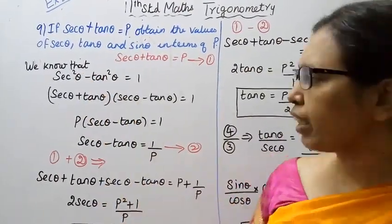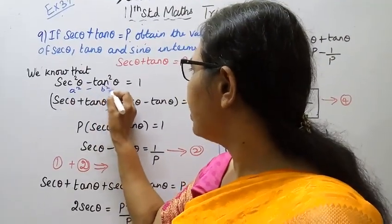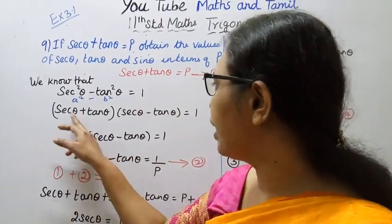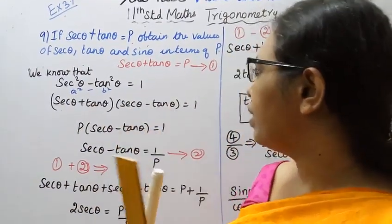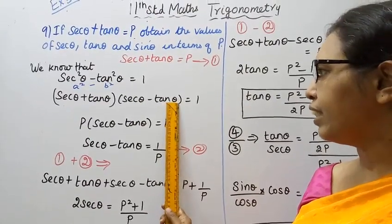This formula is a² minus b², which is (a plus b)(a minus b). So this becomes (sec θ plus tan θ)(sec θ minus tan θ) equals 1.